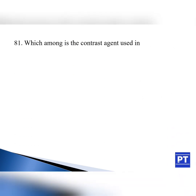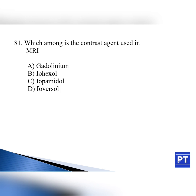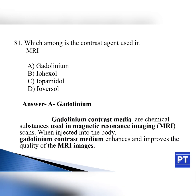Question number 81: Which among the following is the contrast agent used in MRI? Option A: gadolinium, option B: iohexol, option C: iopamidol, option D: ioversol. The answer is option A, gadolinium. Gadolinium contrast medium is a chemical substance used in MRI — magnetic resonance imaging scans. When injected into the body, gadolinium contrast medium enhances and improves the quality of the MRI images. The other options — iohexol, iopamidol, and ioversol — are all non-ionic contrast media used in CT scans as well as for special investigative procedures.